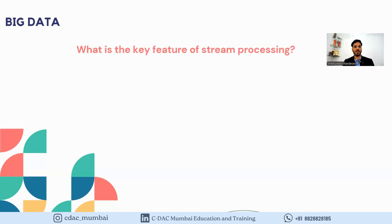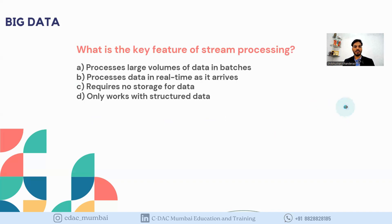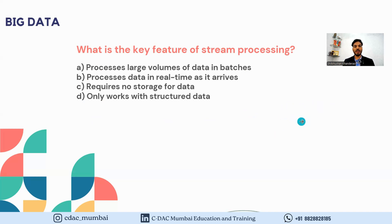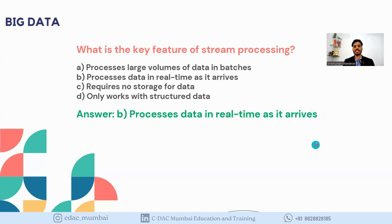The next question is: what is the key feature of stream processing? Options are: A) Processes large volumes of data in batches, B) Processes data in real time as it arrives, C) Requires no storage for data, D) Only works with structured data. The answer is B — processes data in real time as it arrives — that is the key feature of stream processing.